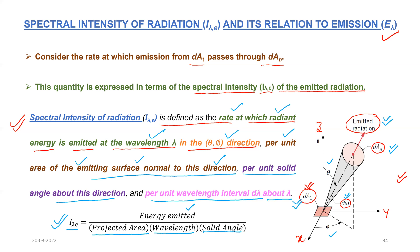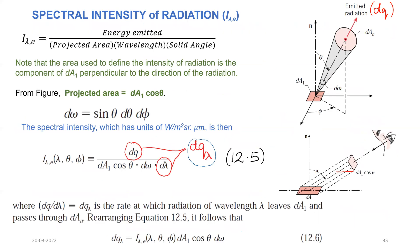Rather, we should call it the directional spectral intensity of radiation, because we are also talking about the direction in which the emission is taking place from area dA1. So it is not only the spectral intensity of radiation; it is the directional spectral intensity of radiation. i_lambda_e equals energy emitted per unit projected area, per unit wavelength, per unit solid angle — three things we have divided.